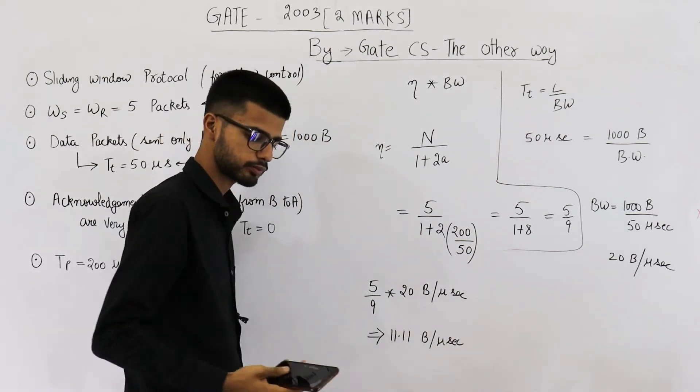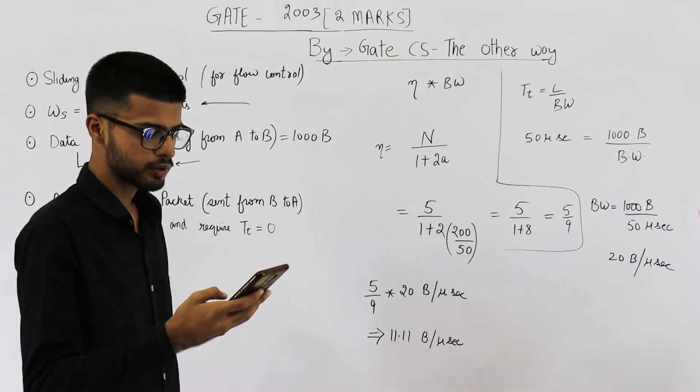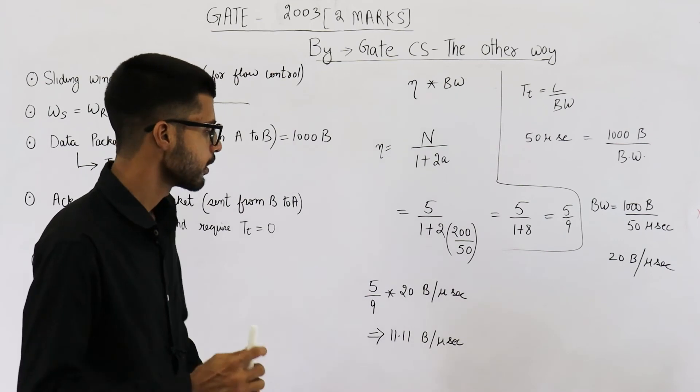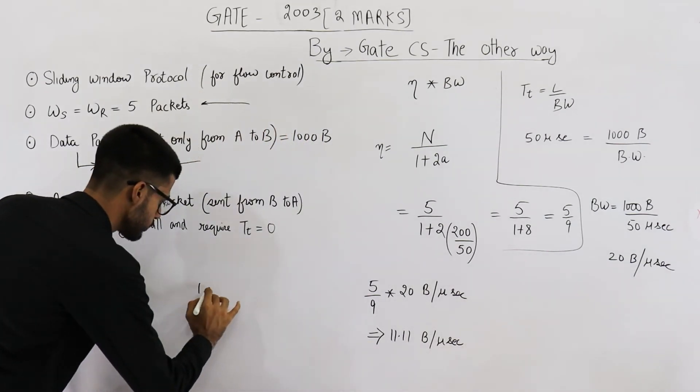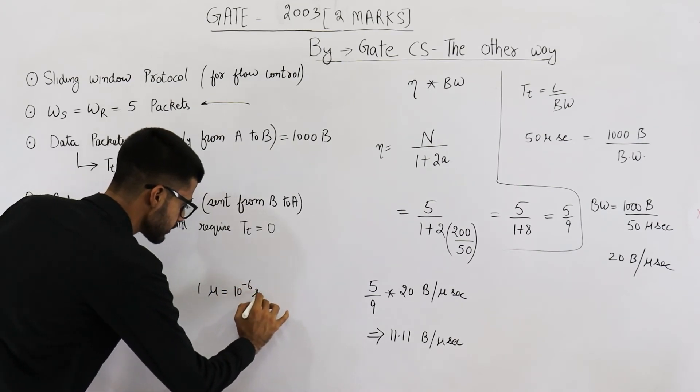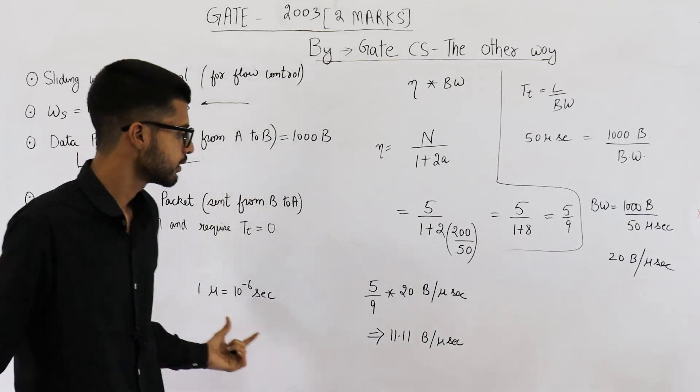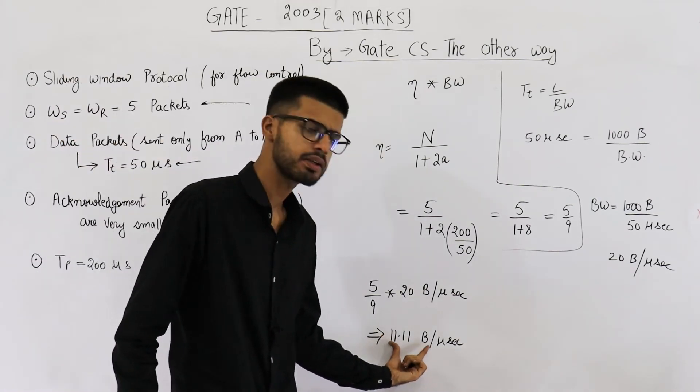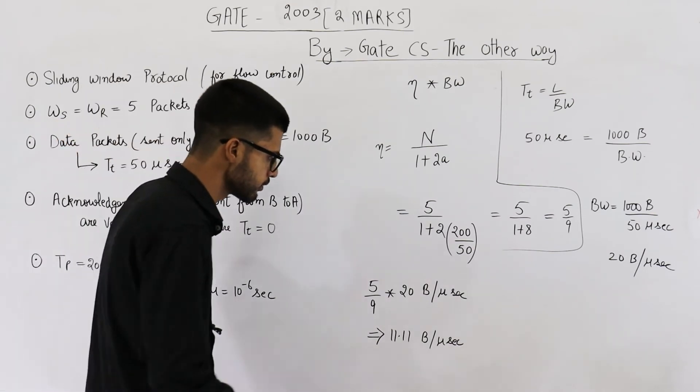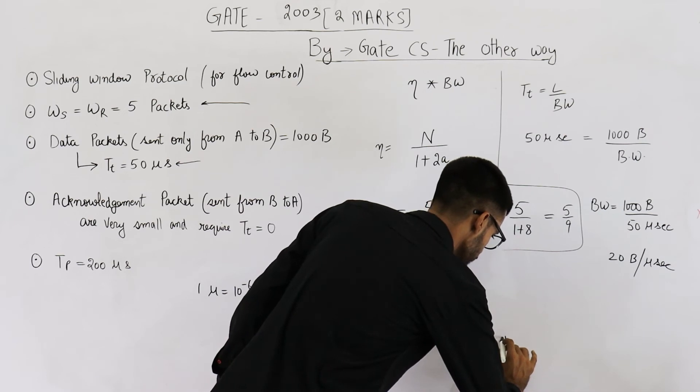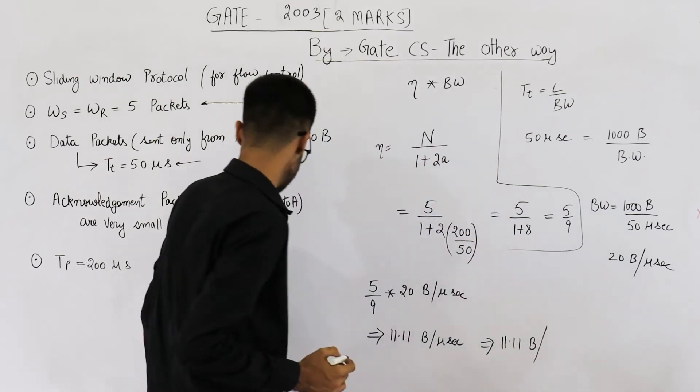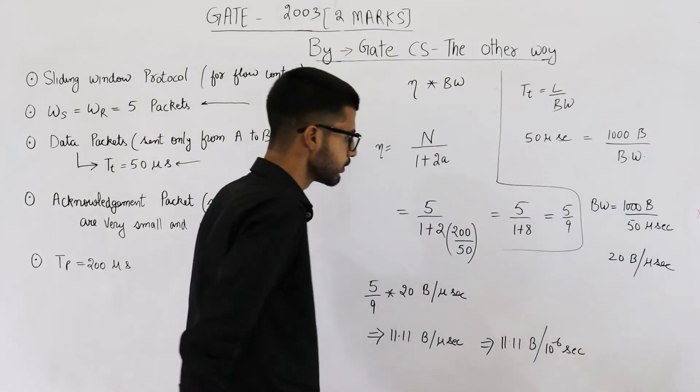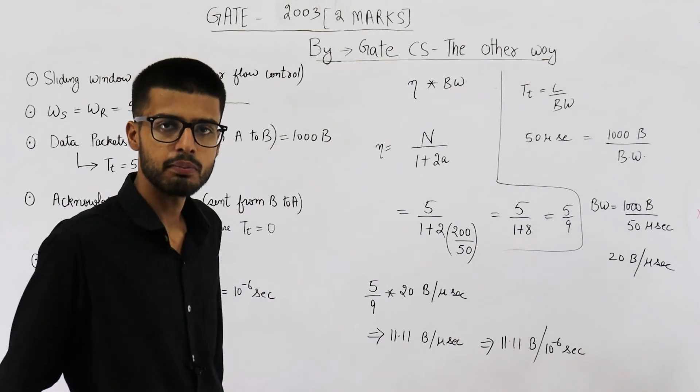So let us see which option is correct. In options the unit is bytes per second, but here we have calculated in bytes per microsecond. So this needs to be converted. 1 microsecond is equal to 10 raised to the power minus 6 seconds. In 1 microsecond, we are sending 11 point 11 bytes. That means in 10 raised to the power minus 6 seconds also we are sending these many bytes only because both of these units are same. So I can write it as 11 point 11 bytes are sent in 10 raised to the power minus 6 seconds. So just multiply the numerator and denominator by 10 raised to the power plus 6.